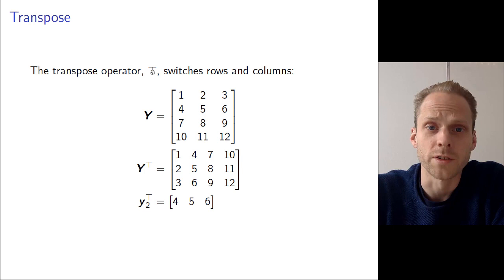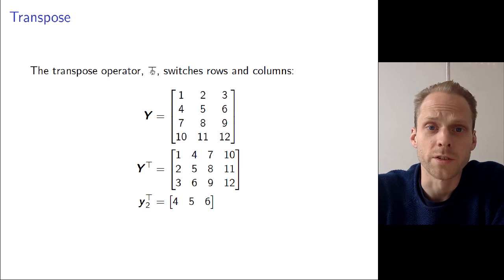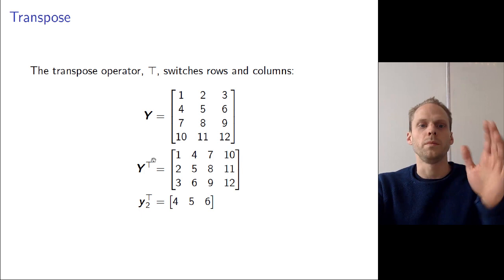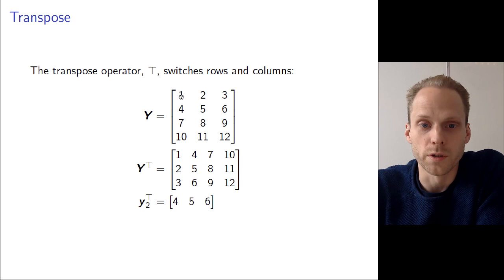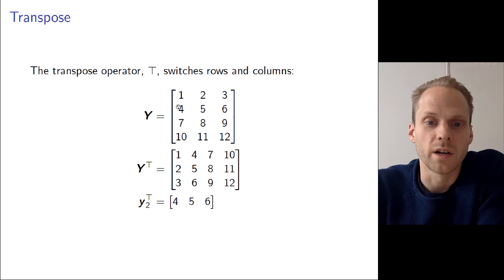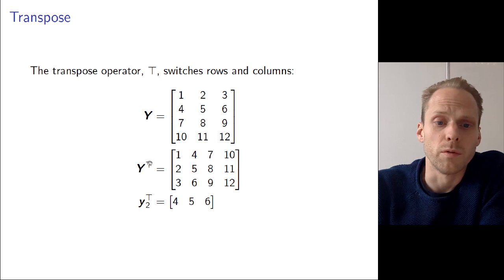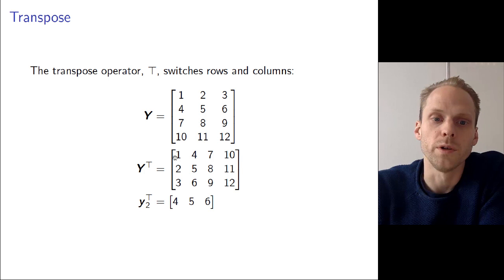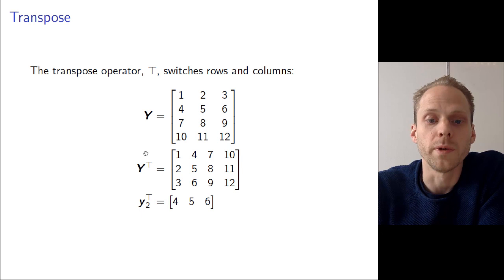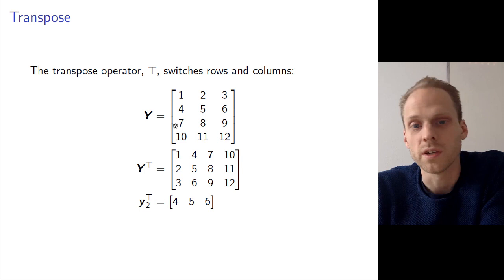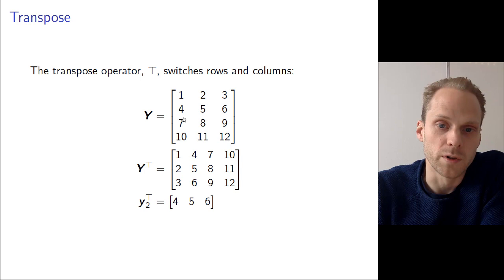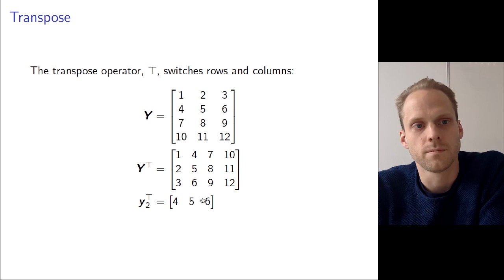A very important operator for matrices is the transpose, which I will indicate with a capital T — you'll also see it in literature with an apostrophe or tick mark. The transpose indicates that we mirror our matrix. So here I have matrix Y with four rows and three columns; row one is 1,2,3; row two is 4,5,6; row three is 7,8,9; row four is 10,11,12. If you do the transpose, each row becomes a column and each column becomes a row, so row one of Y becomes column one of Y transpose. A vector transpose will become a row vector — so y₂ transposed indicates row two of matrix Y, which was 4, 5, 6 as a column, and transposed it becomes the row 4, 5, 6.